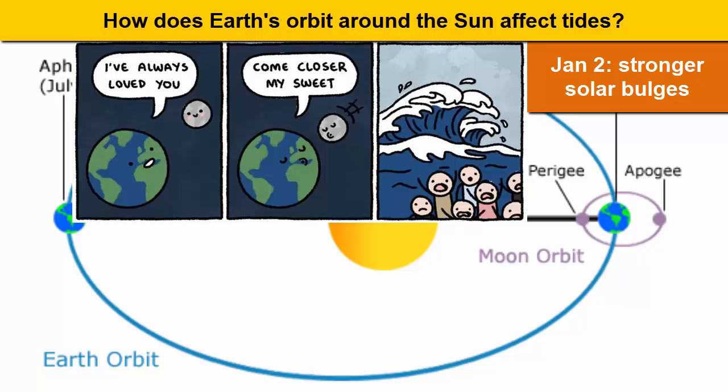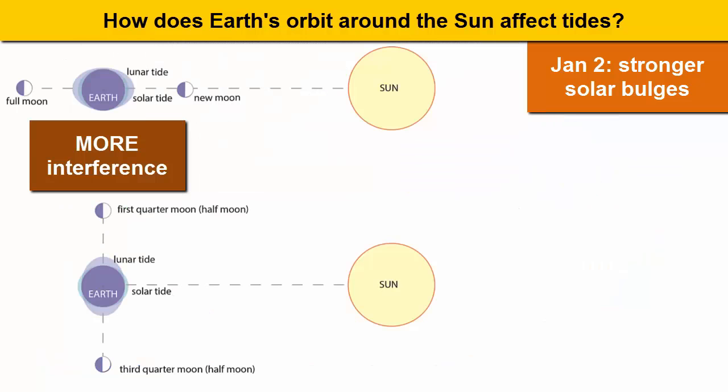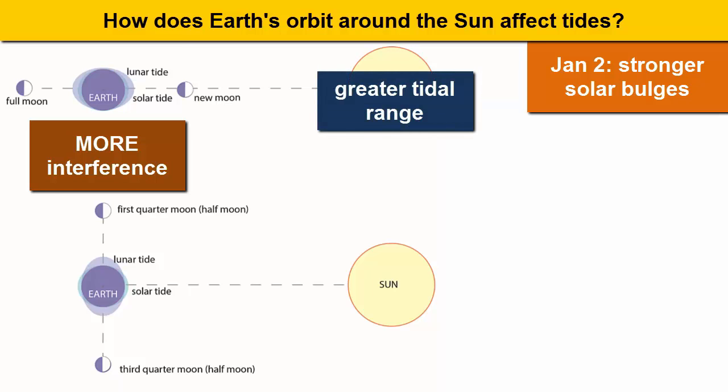And bigger solar bulges means greater interference with the lunar bulges, more constructive interference when they're in phase, and more destructive interference when they're out of phase. The spring tides would have an even greater tidal range, and the neap tides an even smaller one.